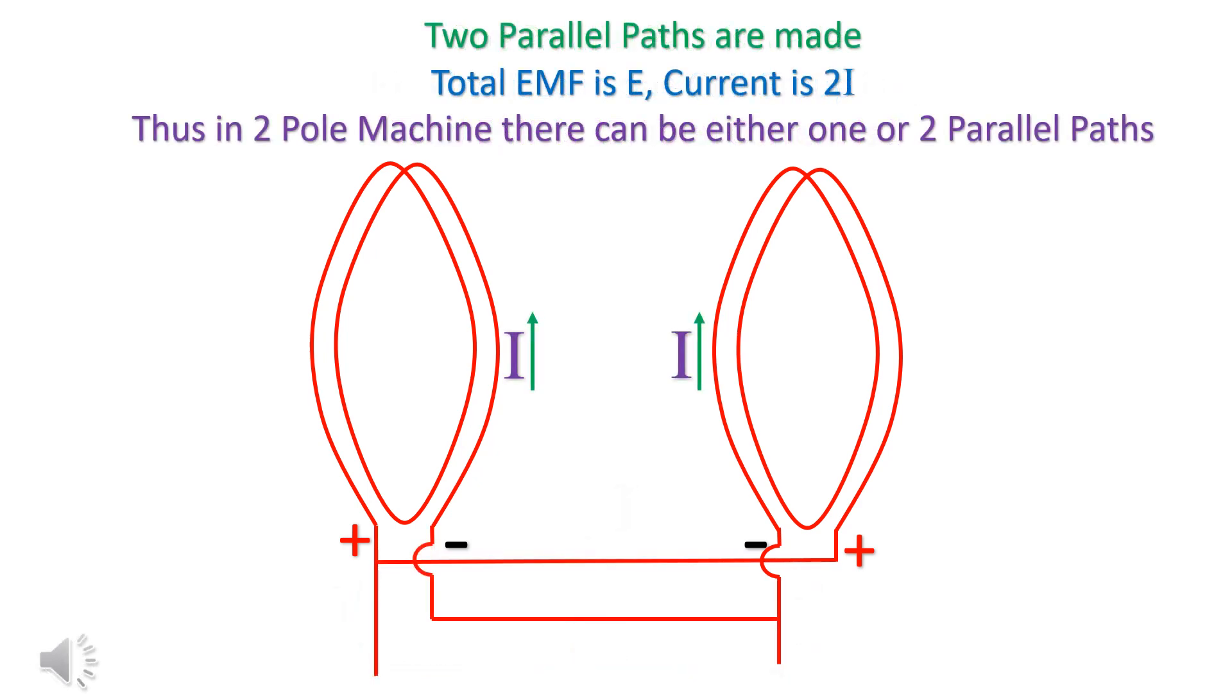Two parallel paths are made. The total EMF is E and the current is 2I. Thus, in two pole machines, there can be either one or two parallel paths.